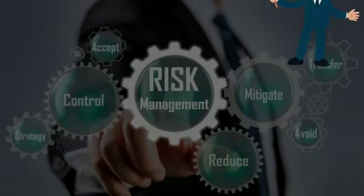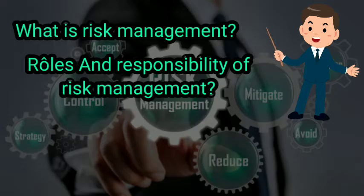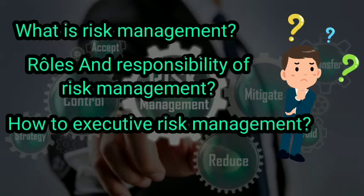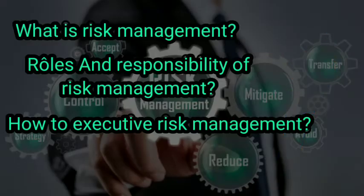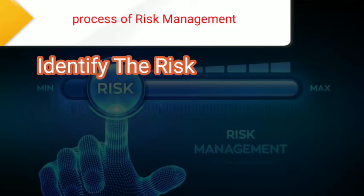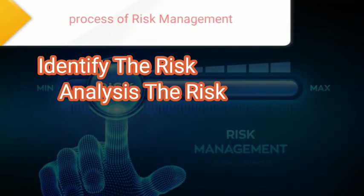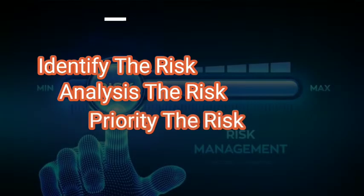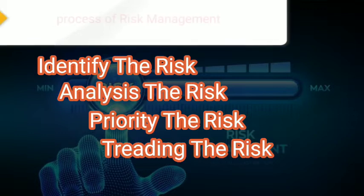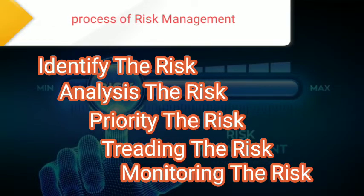How do we work on risk management? How do we execute the risk management? First one is identify the risk, second one is analyze the risk, third one is prioritize the risk, fourth one is treat risk, fifth one is monitor risk. This is how we use this process.